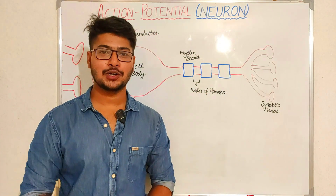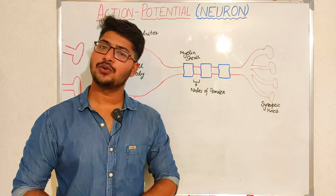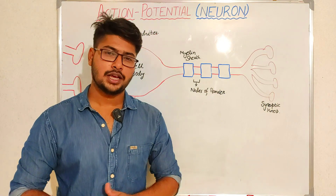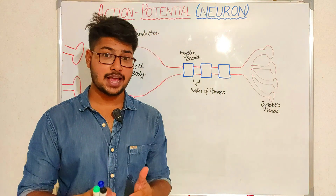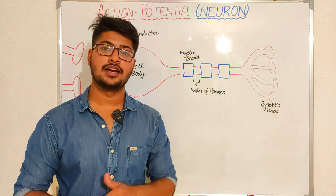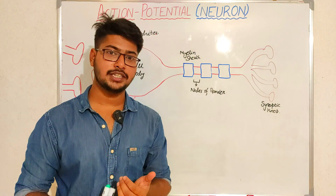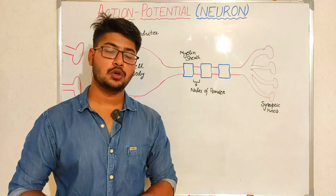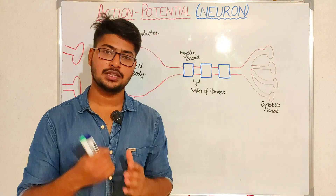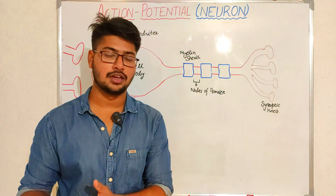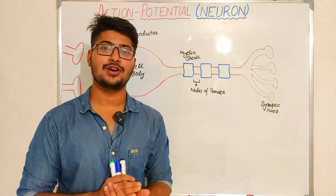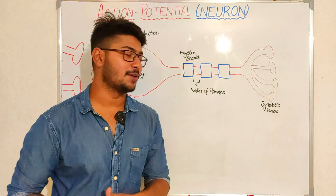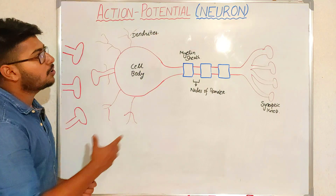Hey guys, my name is Avisek and welcome back to MBPH Stress Channel. Today we are going to read about the action potential of a neuronal tissue or neural cells. In the previous video I have explained about the excitation of a tissue — what are the conditions for excitation, what tissues are excitable, and what stimulus amount is needed. Please watch that previous video to understand this action potential of neurons in a better way.